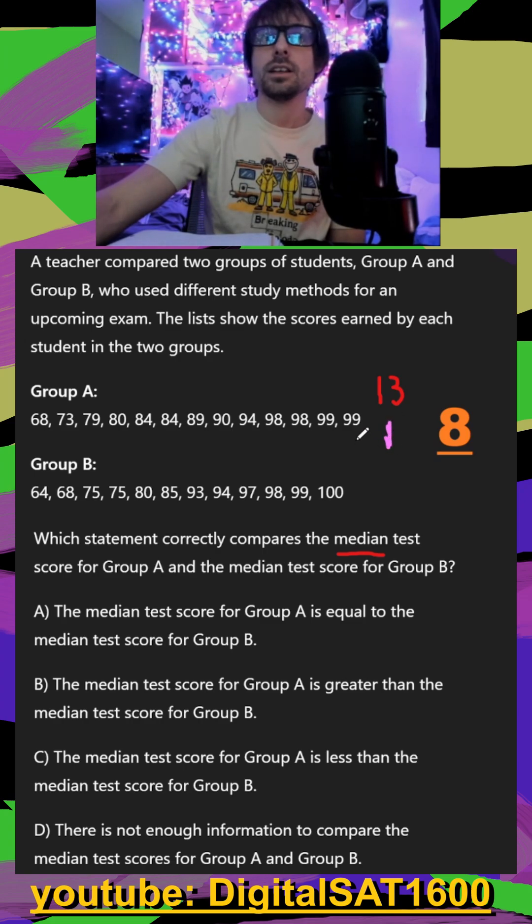There's 12 values left, so that's six to the left and six to the right. That's 13 total values. And finally, your median would be your seventh value. Counting to the seventh position, we know that it's 89 in group A.